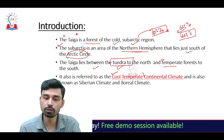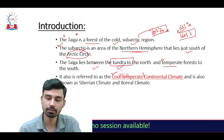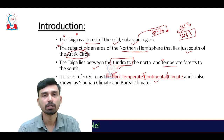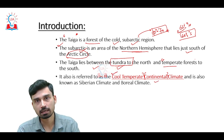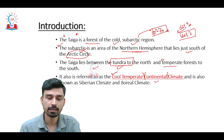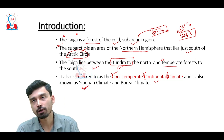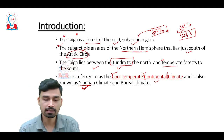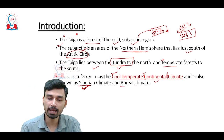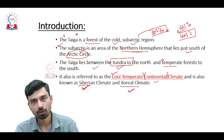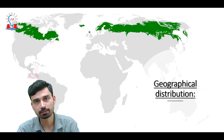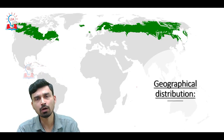Due to its location, the Taiga is also referred to as cool temperate continental climate — cool temperate because it develops in the upper part of the temperate region, and continental because the climate develops in the middle of the continent surrounded by land on all sides. Since a vast territory of Taiga lies in the Siberian region of Russia, it is also referred to as Siberian climate, as well as Boreal climate.